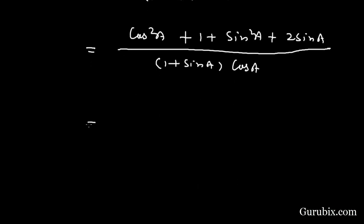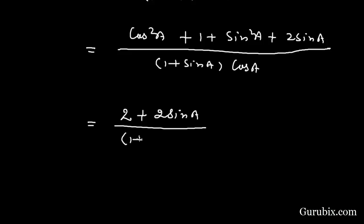If we further simplify, we can substitute 1 in place of sin² A + cos² A using the Pythagorean identity. So we get 1 + 1, which means 2, giving us 2 + 2 sin A over (1 + sin A) times cos A.